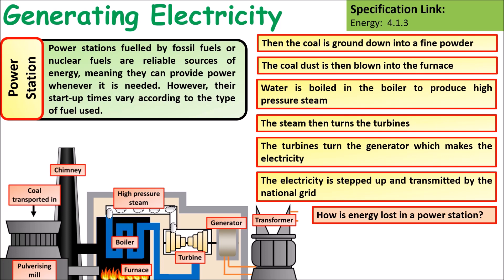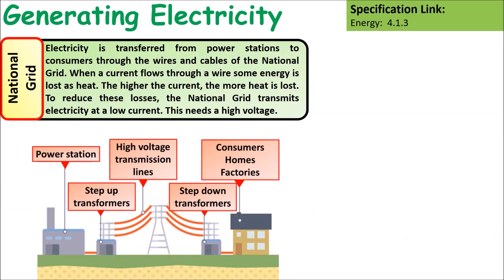Energy losses in the power station include heat energy that is not used to heat the water — for instance, heat radiated from the power station or lost up the chimney to the environment. Electricity is transferred from power stations to consumers through wires and cables via the national grid, transmitted at high voltage because this reduces energy losses.